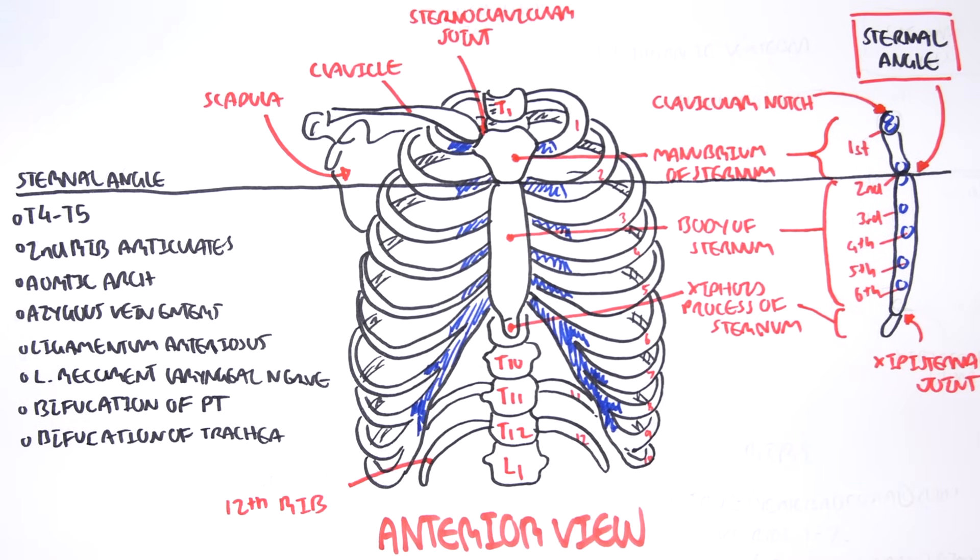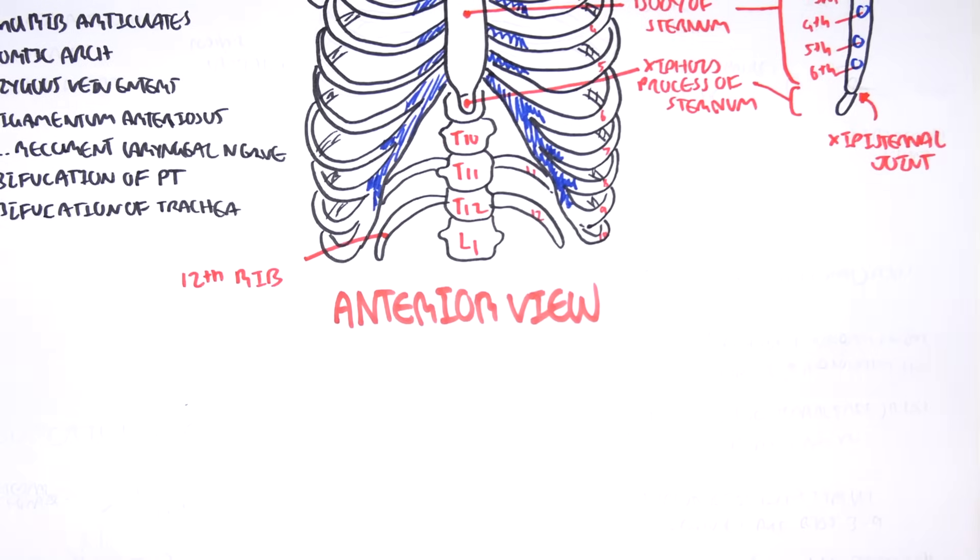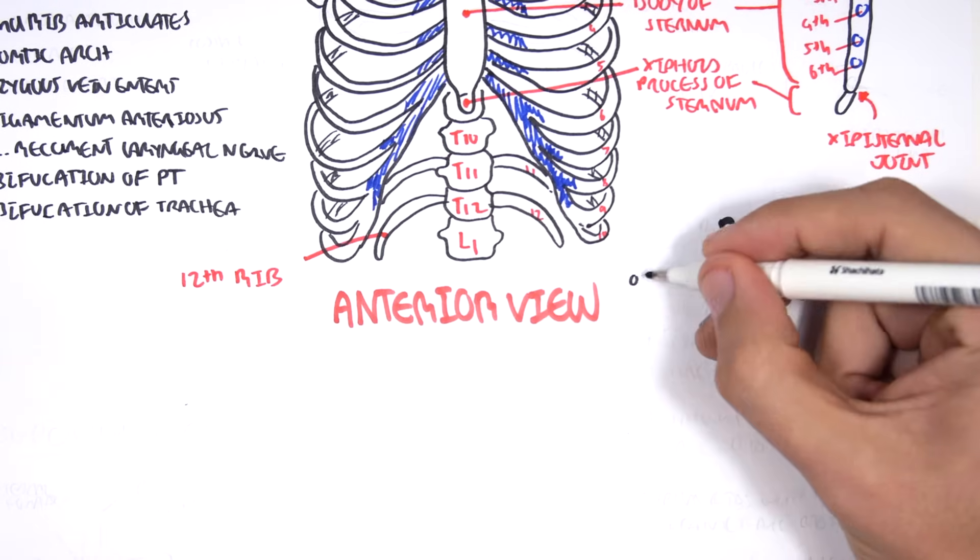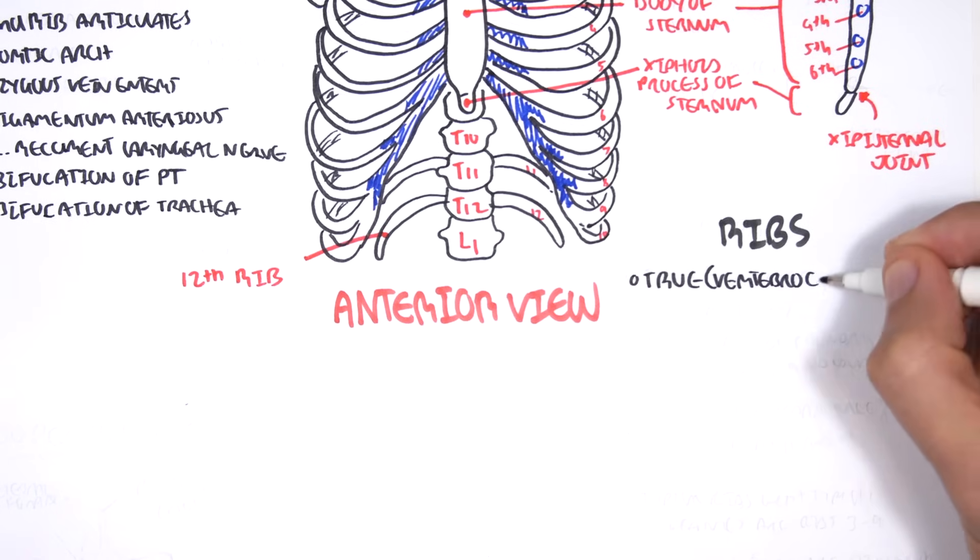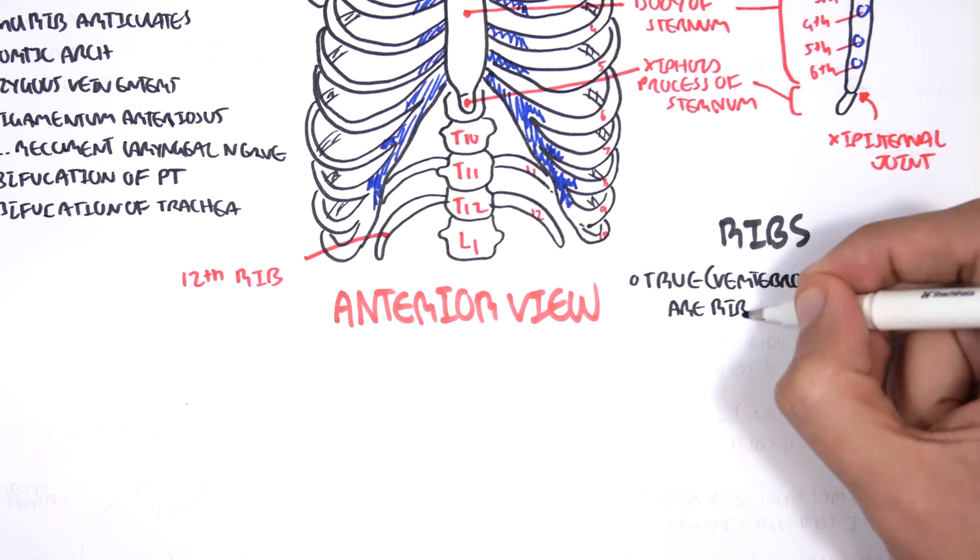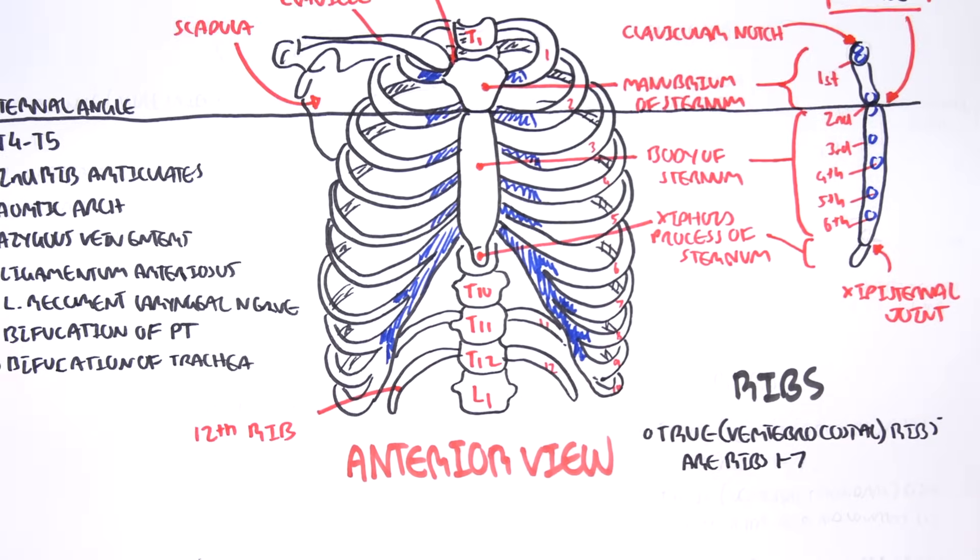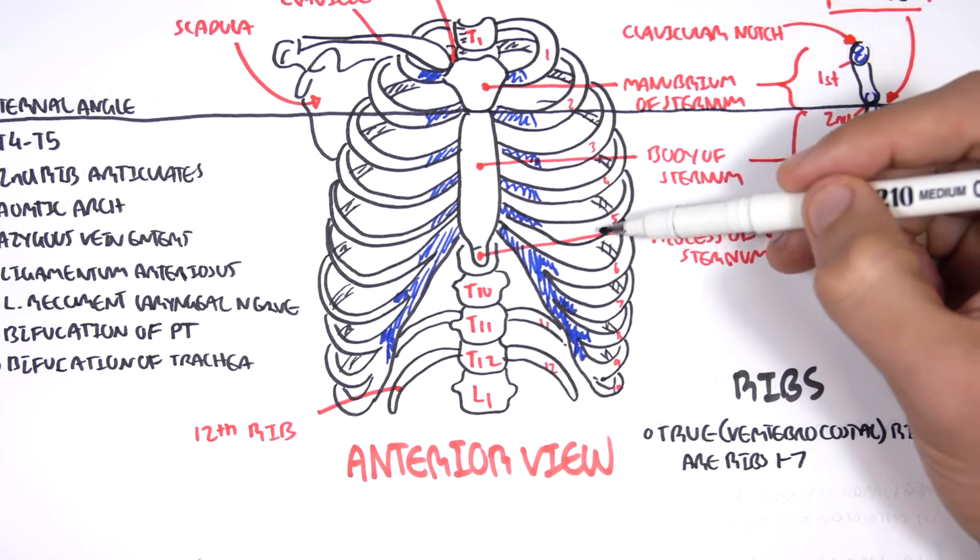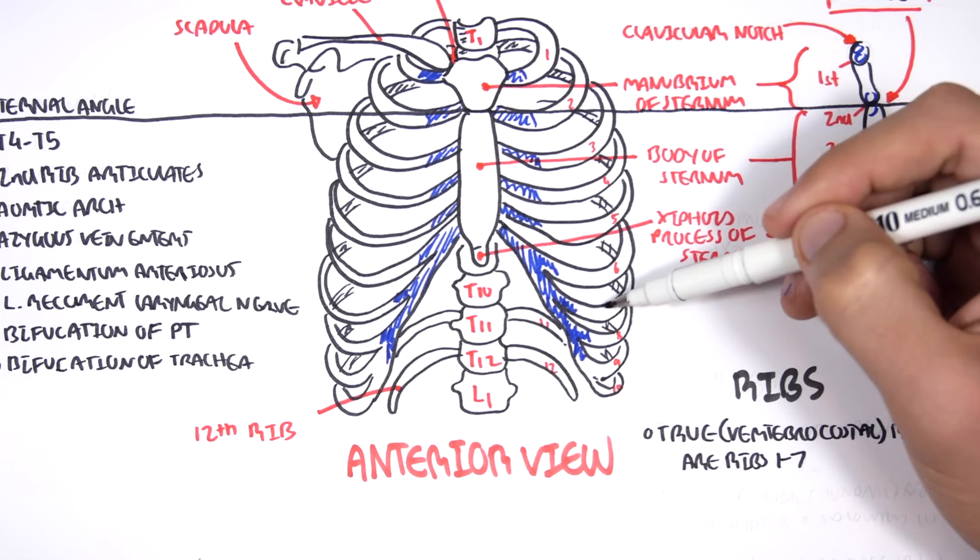Now let's talk a bit more about ribs. So ribs can be divided into true, false and floating. True ribs are also known as the vertebrocostal ribs, which are ribs 1 to 7. These are ribs that originate from the vertebra and join to the sternum through the costal cartilages.